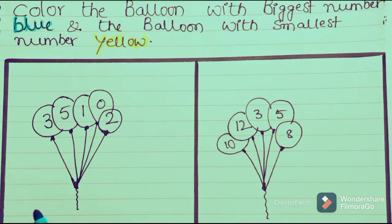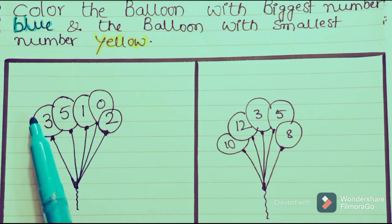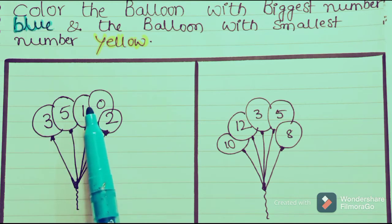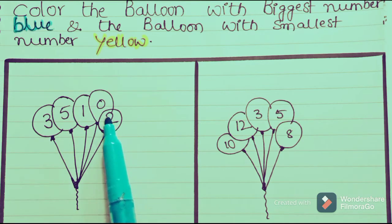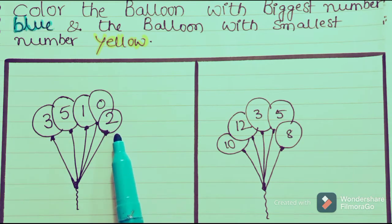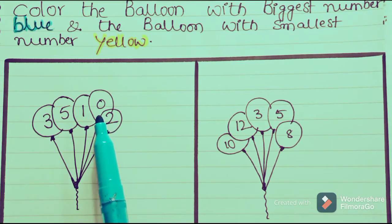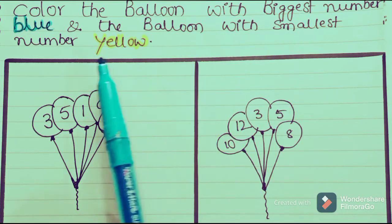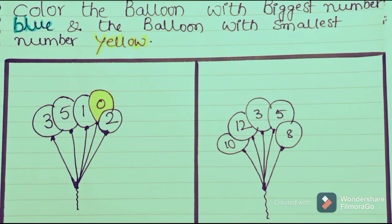Let us see the first bunch of balloons. In this first bunch we have numbers 3, 5, 1, 0, and 2. In these five numbers, which number comes earlier? Zero comes earlier, so zero is the smallest number. We should color the balloon with the smallest number in yellow.